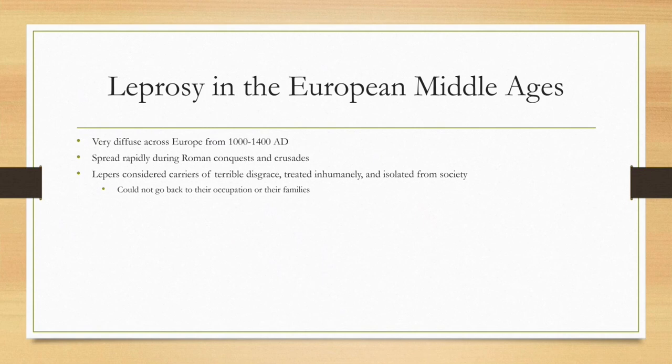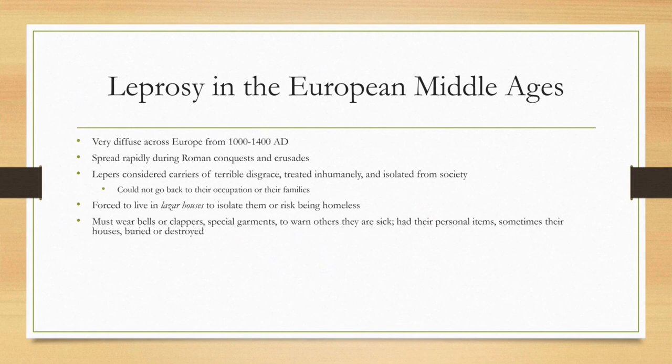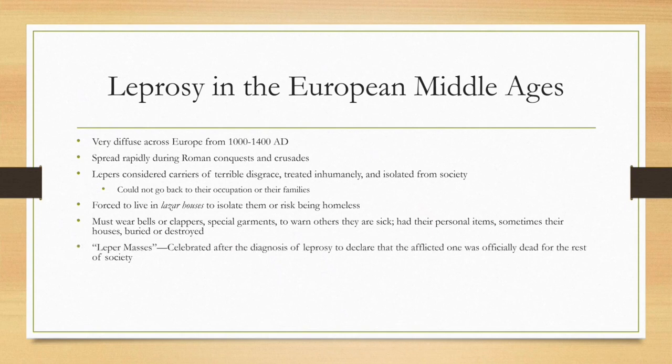Lepers were considered carriers of terrible disgrace, treated inhumanely, and isolated from society. They couldn't go back to their occupations or families. They were forced to live in houses called Lazar houses, were essentially homeless, had to wear bells and carry clappers to announce their presence, and had to wear special garments to identify their sickness. Their personal artifacts or even homes were destroyed. There was something called leper masses that celebrated after the diagnosis of leprosy to declare that the afflicted one was officially dead to the rest of society.